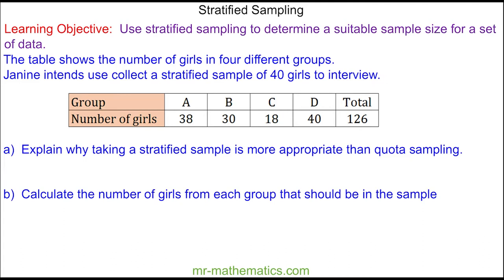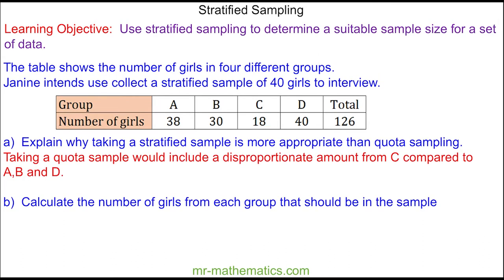We would use stratified sampling from this data because we have a disproportionate amount of A and D than we do in group C. So if we were to use quota sampling it would be biased against group C. To calculate the number of girls that should be in each sample, we need to work out the proportion.